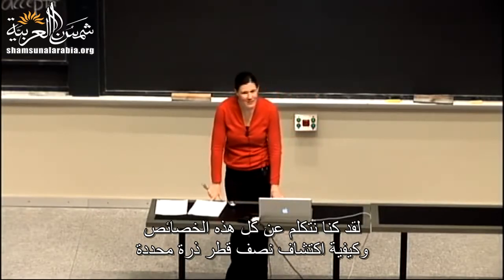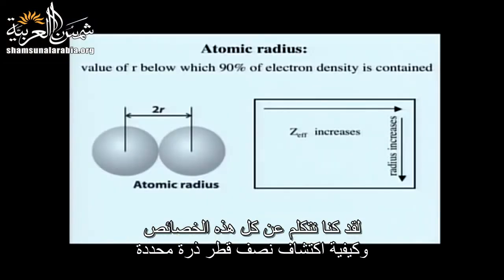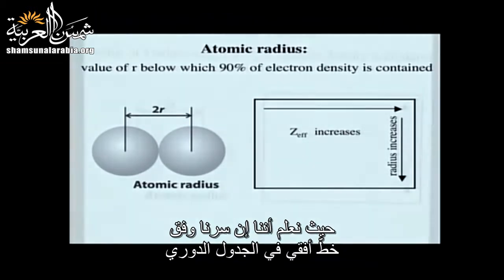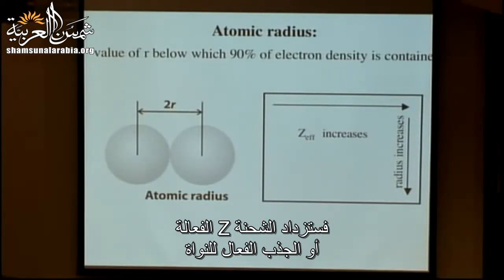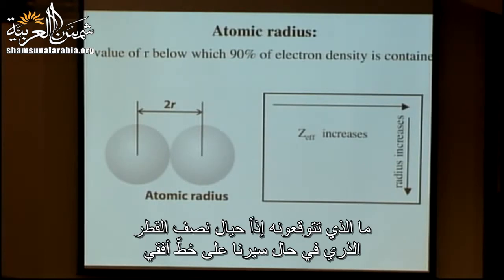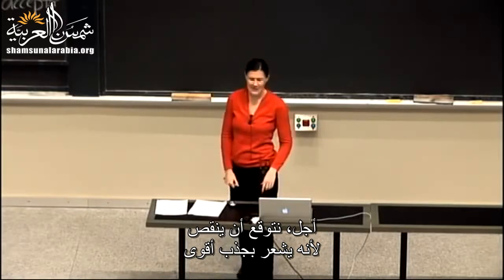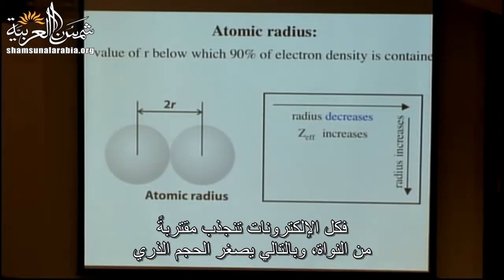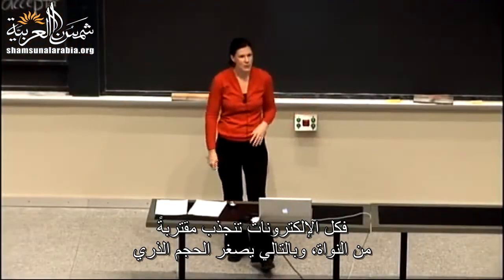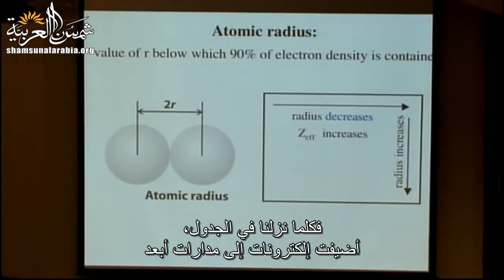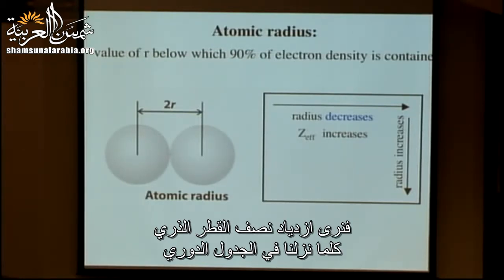For the periodic trend of atomic radius: as we go across a row, Z effective increases, so electrons are pulled in more tightly — atomic radius decreases. As we go down the periodic table, electrons are added to further shells, so atomic radius increases. Starting from lithium in the upper left, radius increases going down the table and decreases going across a row.